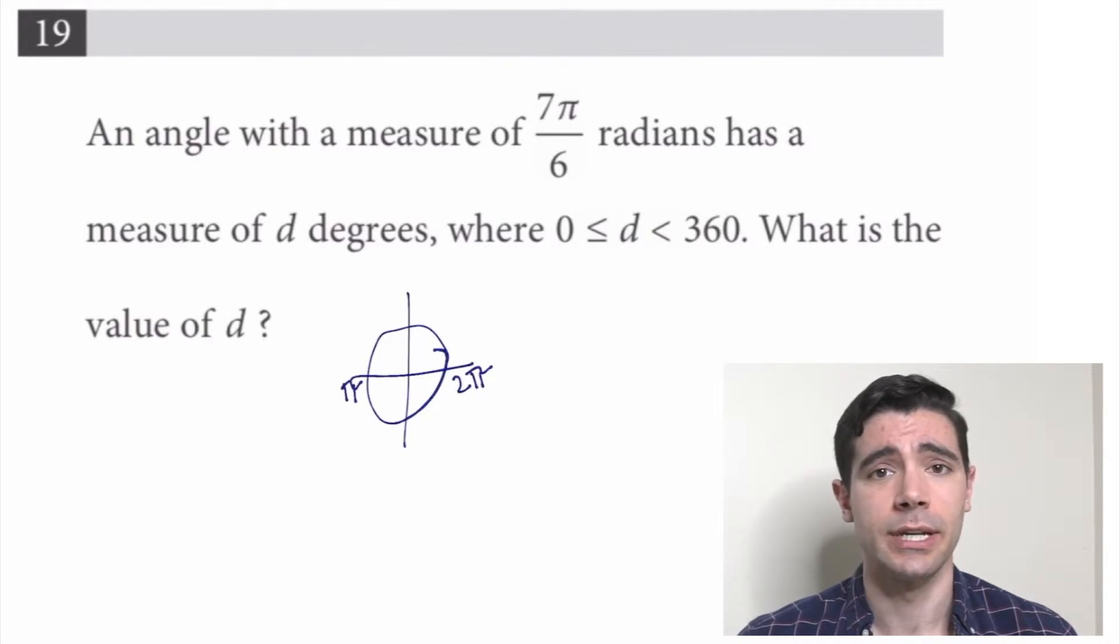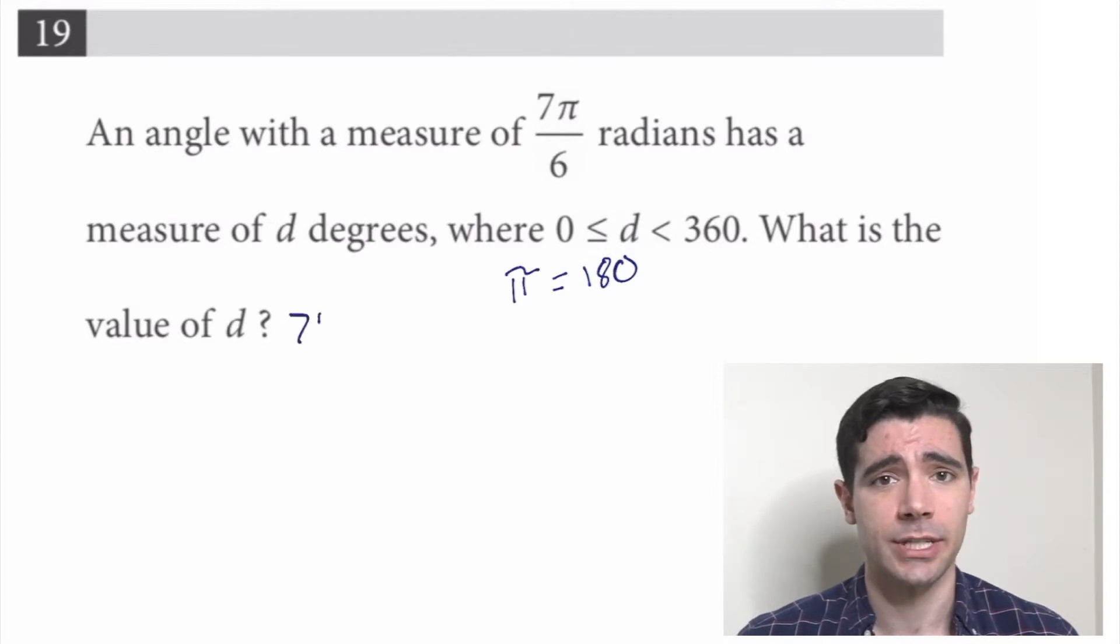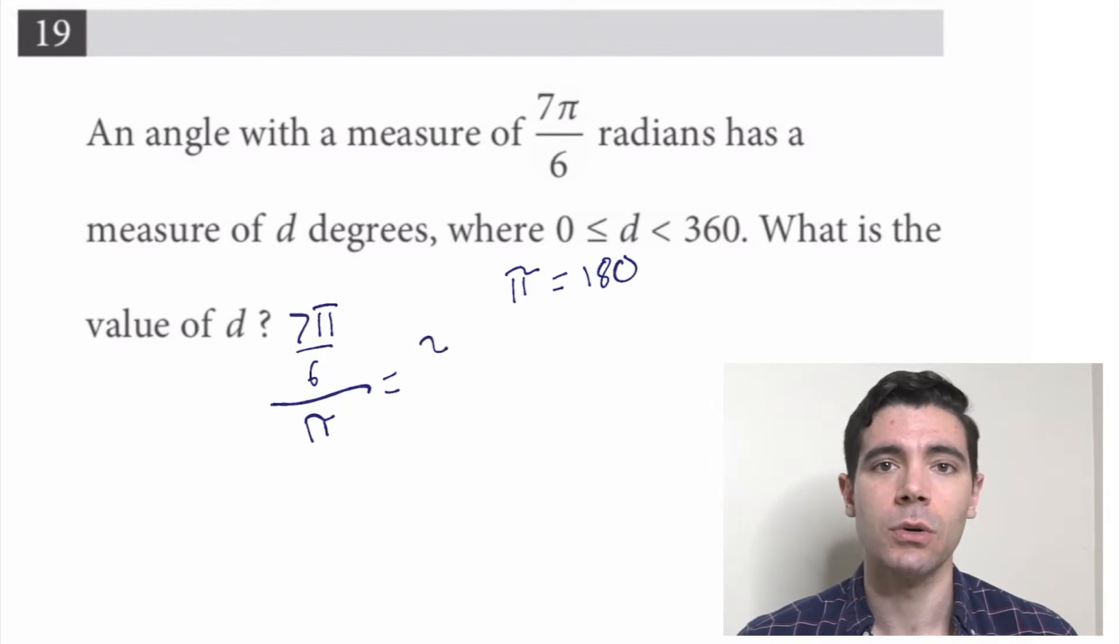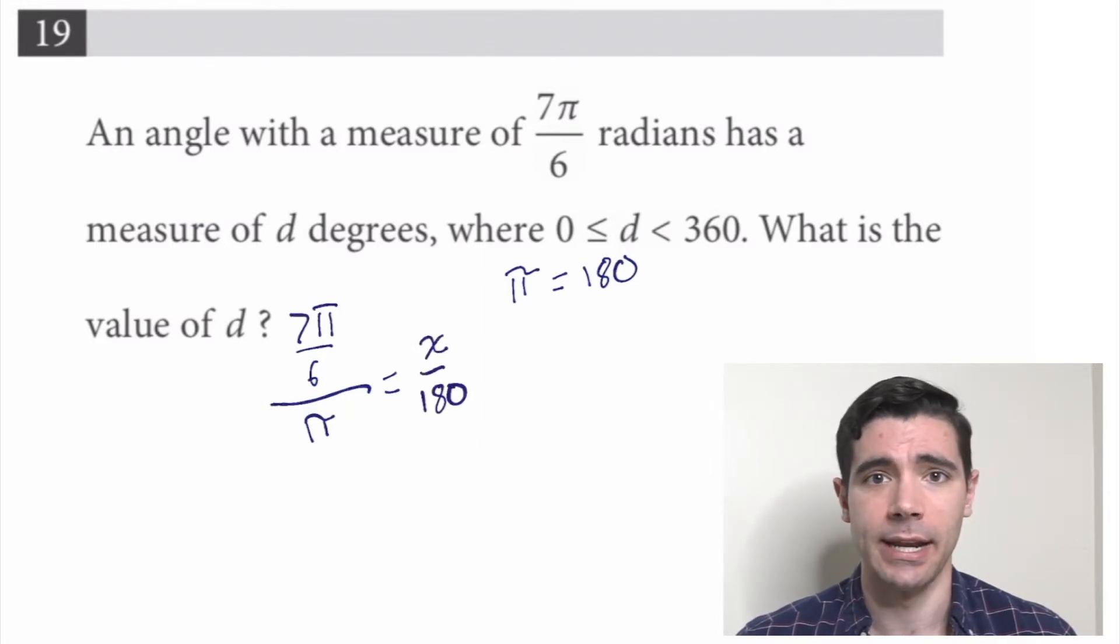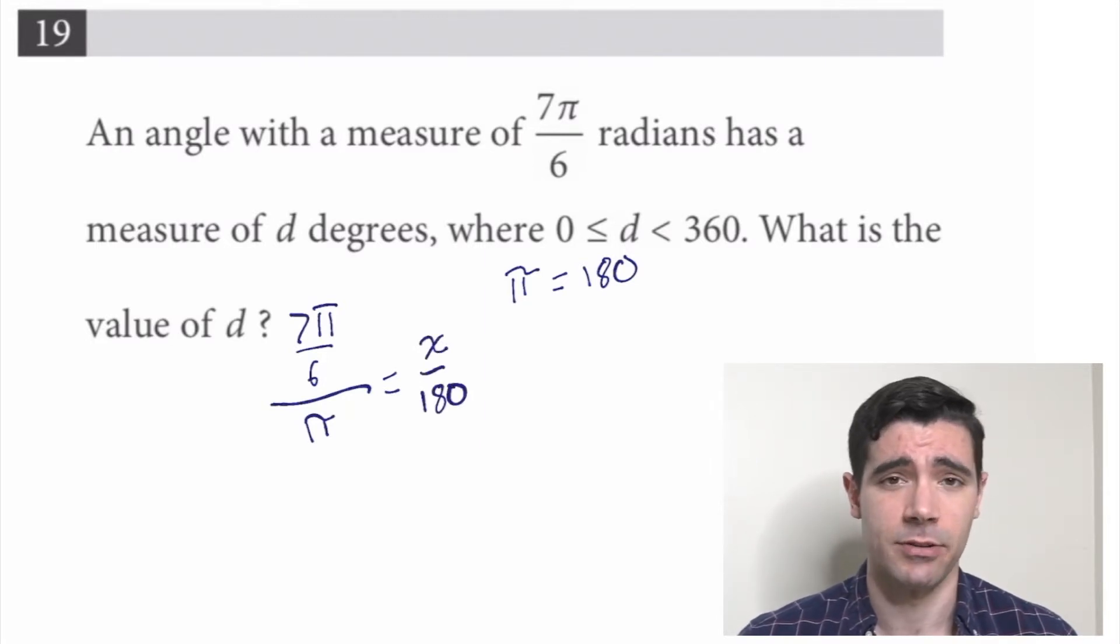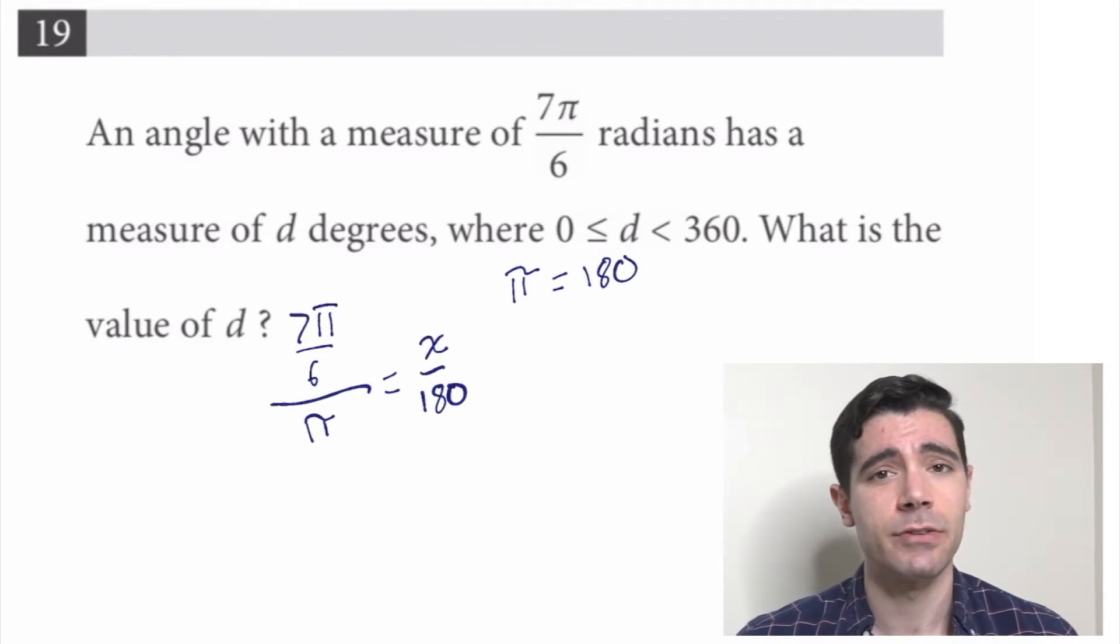Half a circle, or 180 degrees, would just be π radians. So π is 180 when you're talking about transferring from radians to degrees. Okay, so then we can set this up as a simple part-over-whole proportion. We have 7π/6 over π, right, equals some number over 180. Because π and 180 are equivalent, so these two numerators have to be equivalent as well.